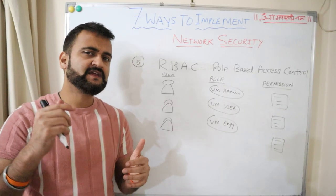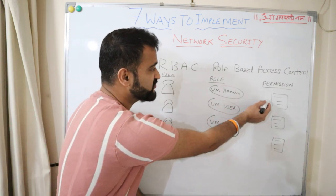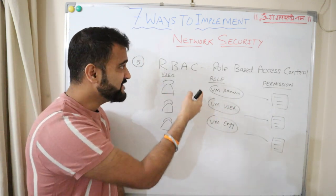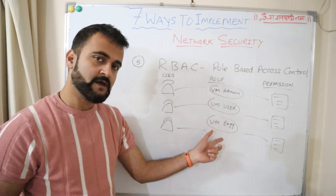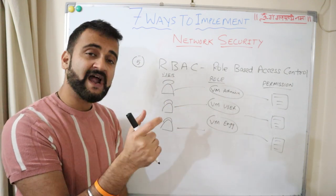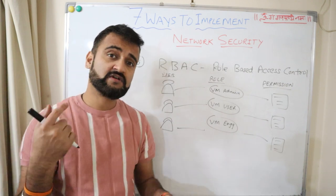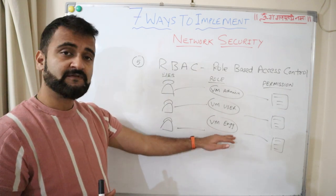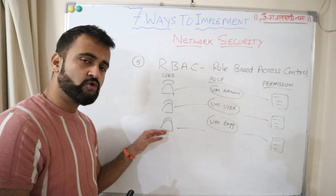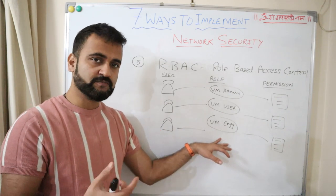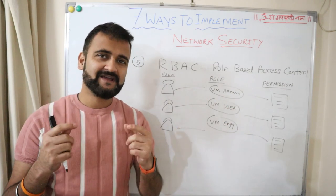The fifth method is RBAC — Role-Based Access Control — a very popular method especially on cloud platforms. It's similar to ACLs but goes to the next level: instead of assigning users direct permissions, you create dedicated roles and assign permissions to those roles, then apply the roles to specific users. For example, a VM Admin role can switch machines on/off and apply patches; a VM User can only take a remote desktop; a VM Engineer can run antivirus checks.